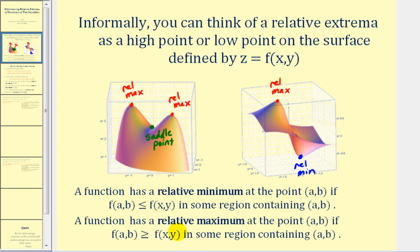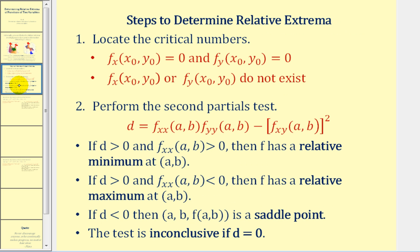Let's take a look at how we're going to determine the relative extrema for functions of two variables. We're going to first locate the critical numbers, which occur where the first-order partials are both zero or where they do not exist. Once we find our critical numbers, we'll determine this quantity d using the second-order partial derivatives, and that will tell us whether we have a relative min, relative max, a saddle point, or the test is inconclusive.